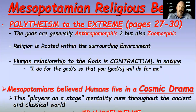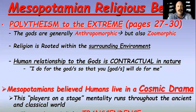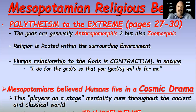For the first time structurally in human history, we can talk about polytheism — the belief in many gods. In the modern world, we have crystallized into monotheistic belief: Christianity, Islam, Judaism — major belief systems that believe in one god, one overarching controlling being. That wasn't the case in Mesopotamia and throughout much of the ancient world. Polytheism was the norm, and in Mesopotamia it was polytheism to the extreme. Please read about it on pages 27 through 30.